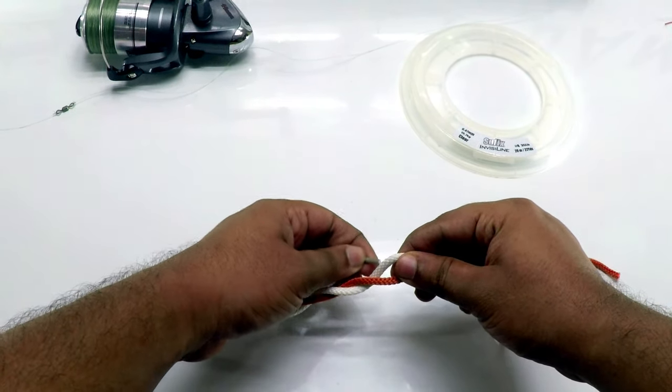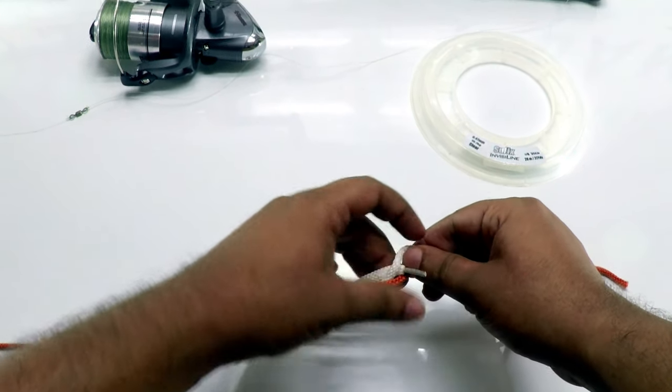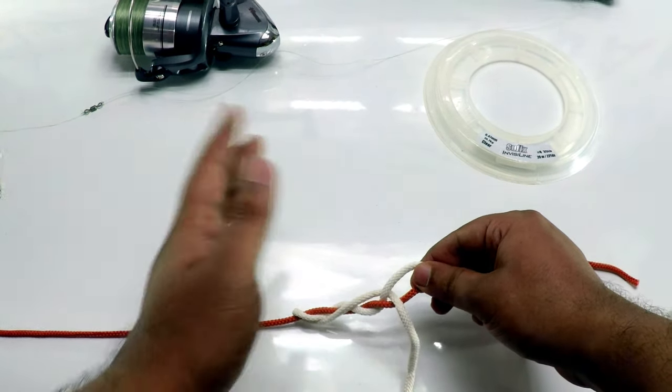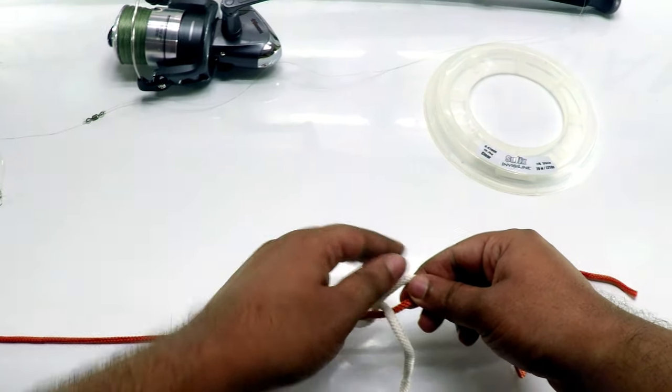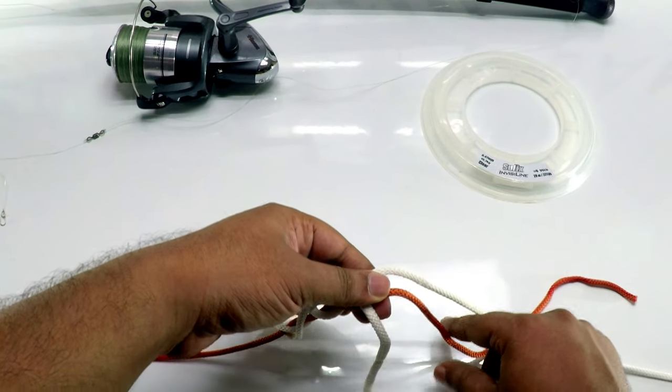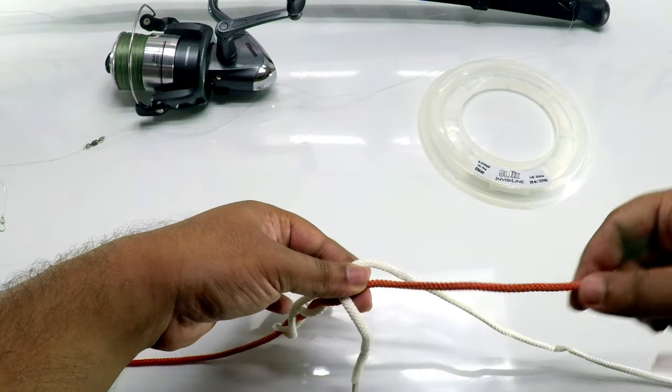After you've looped it three to four times around the red wire, pass it through this hole which is there and pull it out. Then hold these two lines again.